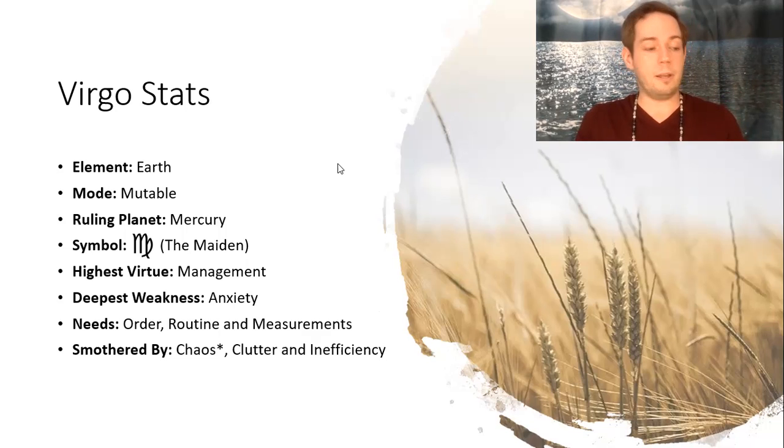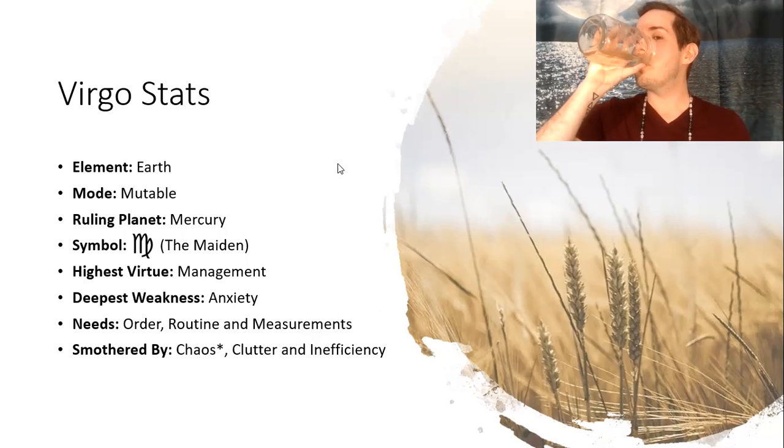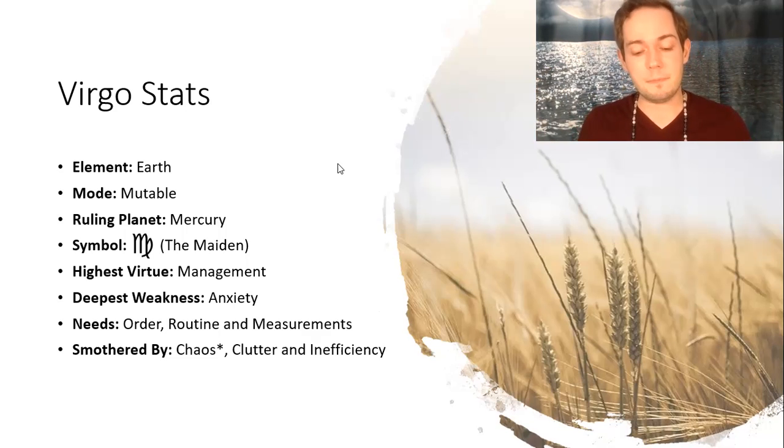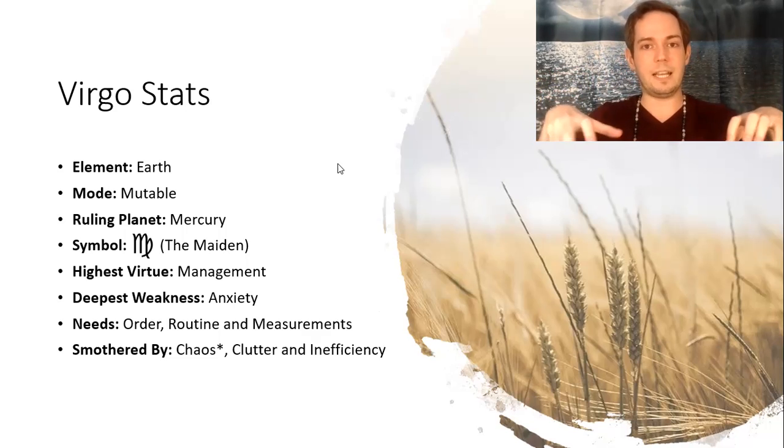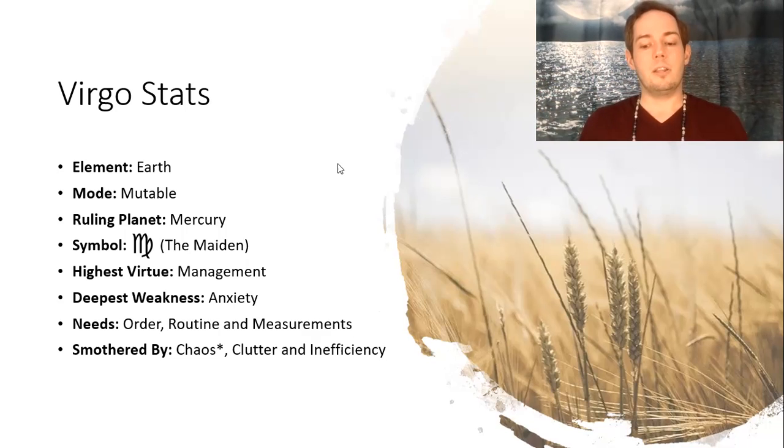Virgo is very much an earth element sign because of that. But Virgo is a unique earth element, because unlike Cardinal Capricorn or fixed Taurus, we have Virgo which is mutable. So mutable Virgo comes in and says yes, earth is solid, yes earth is dense, yes earth is stable, but we need to break up that stability. We need to portion, that's a good word for Virgo, those resources.